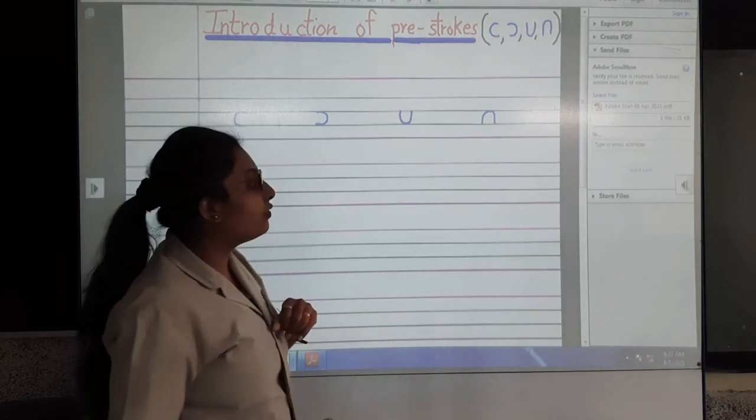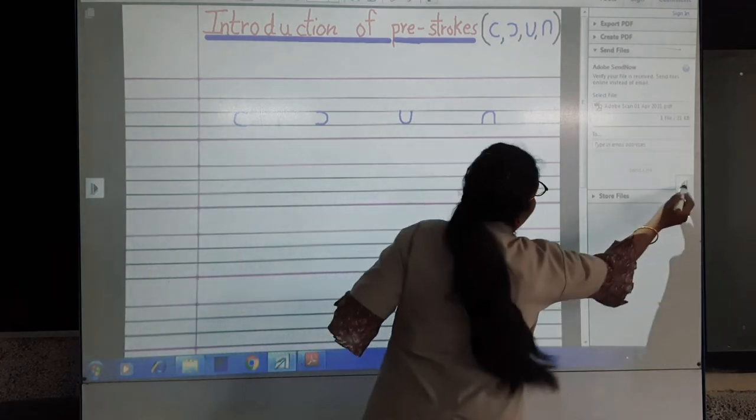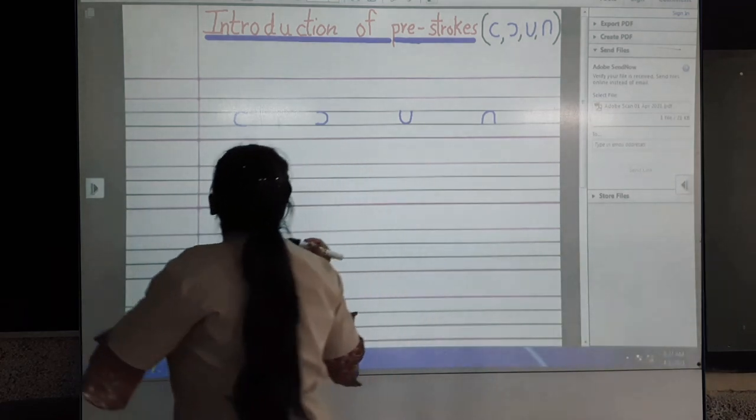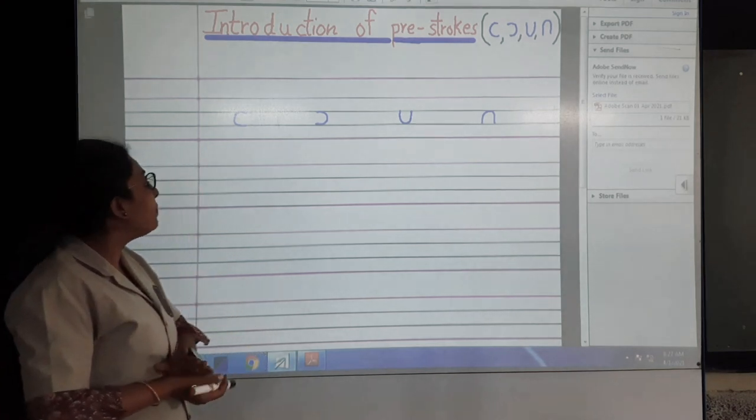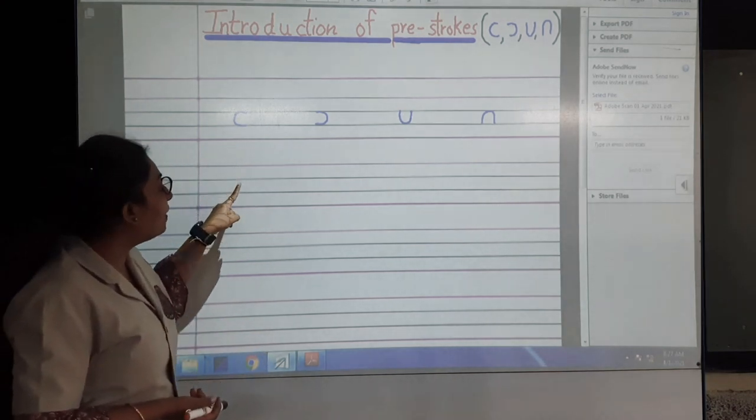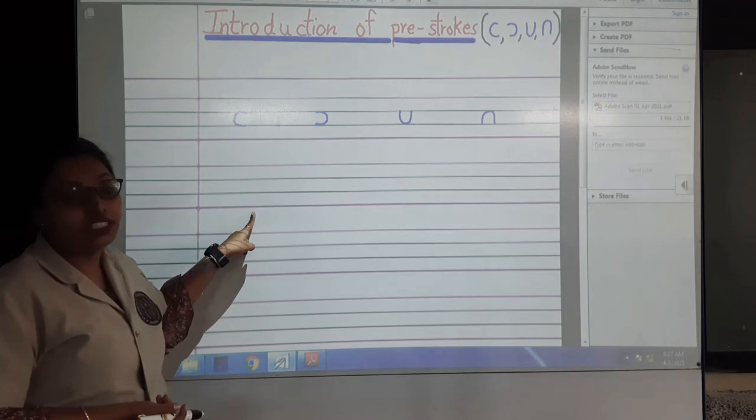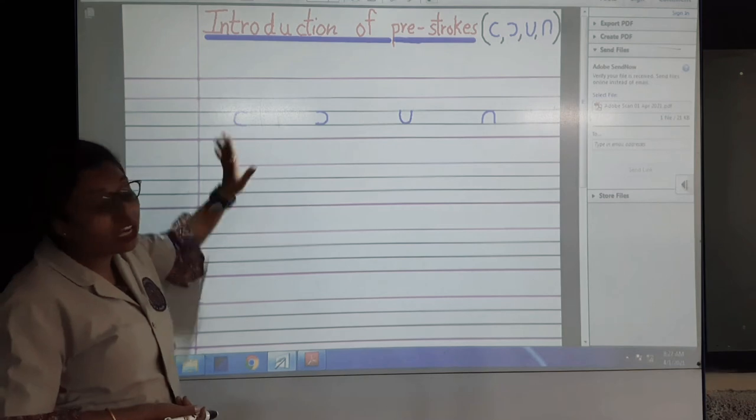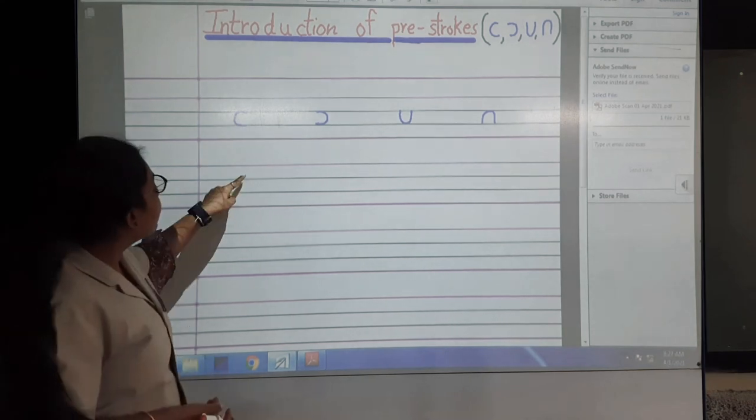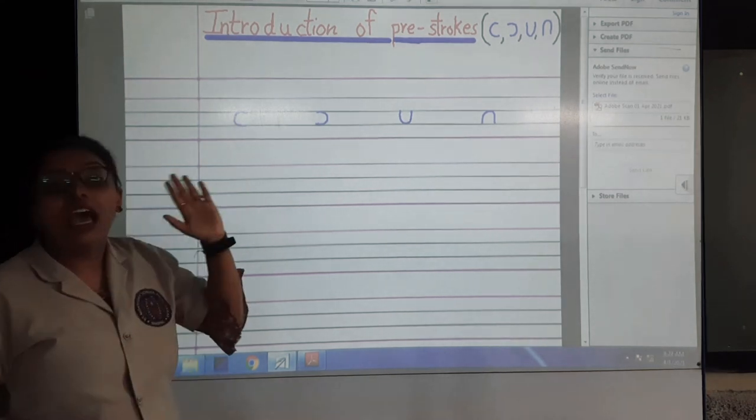We'll start with the C curve. Ma'am had made you lines in yesterday's class. First, second, third, and fourth. Four lines. First, second, and third, fourth. C curve second and third line.